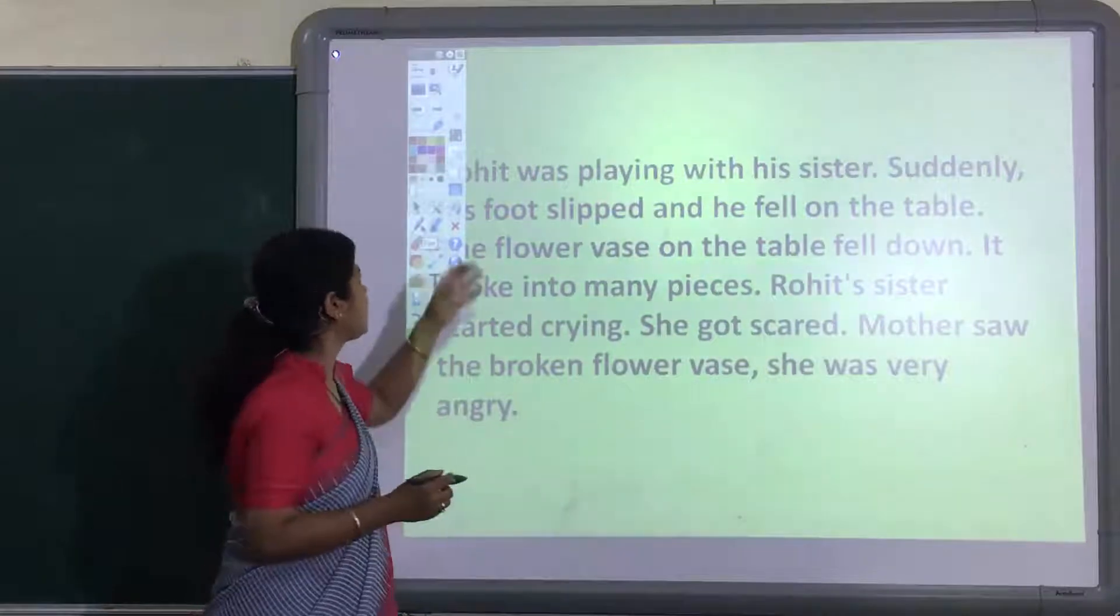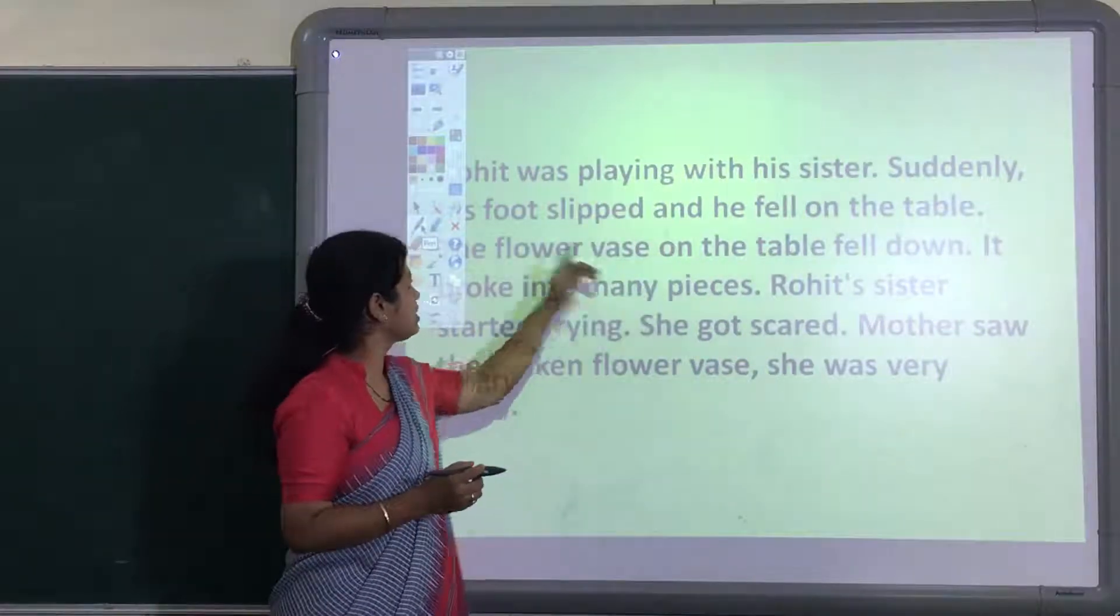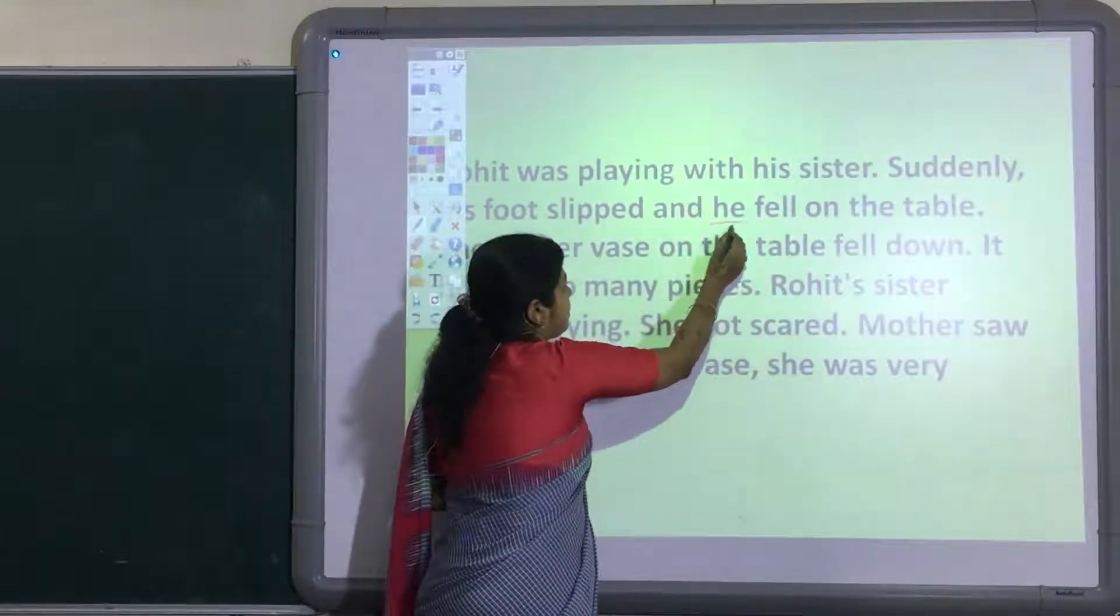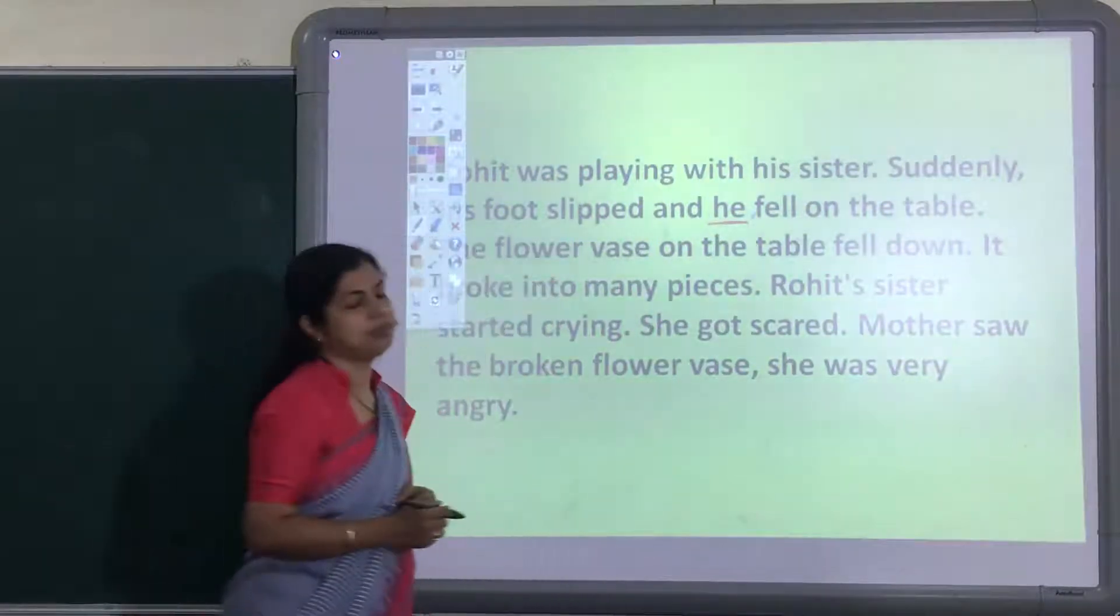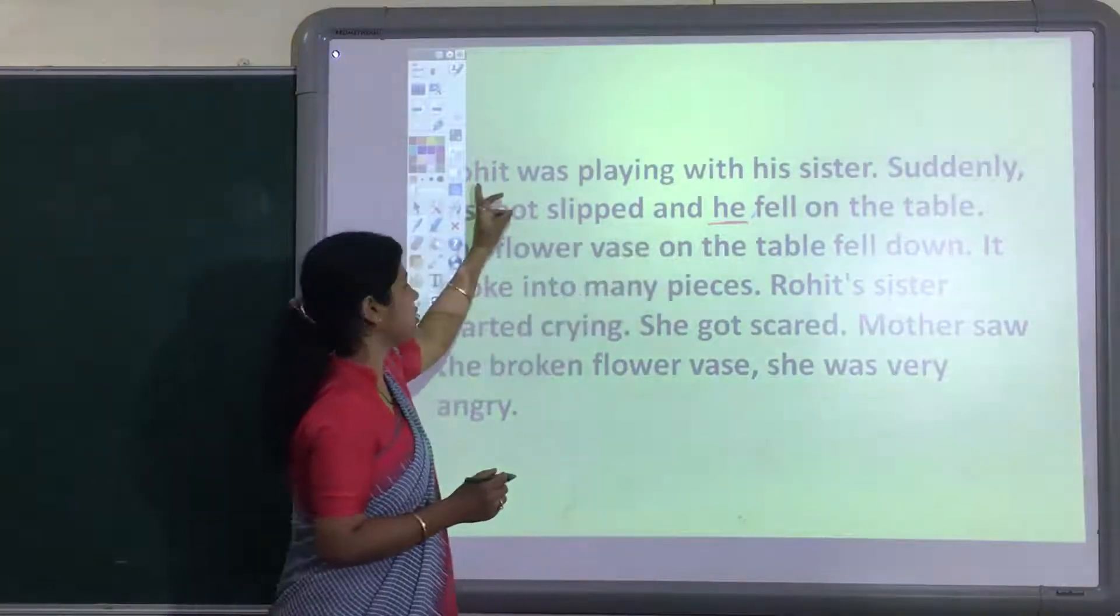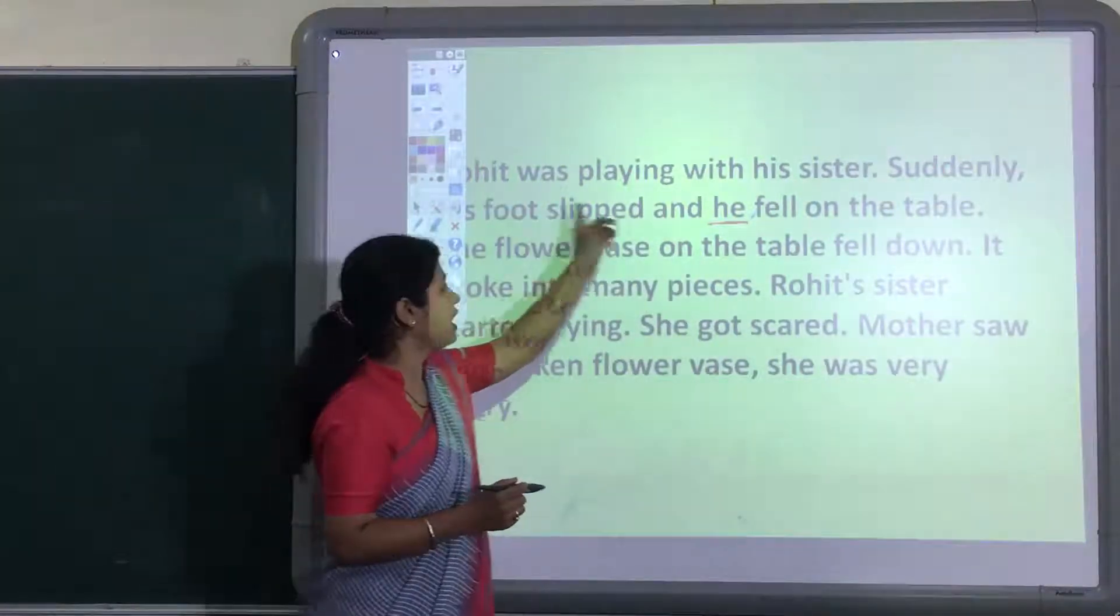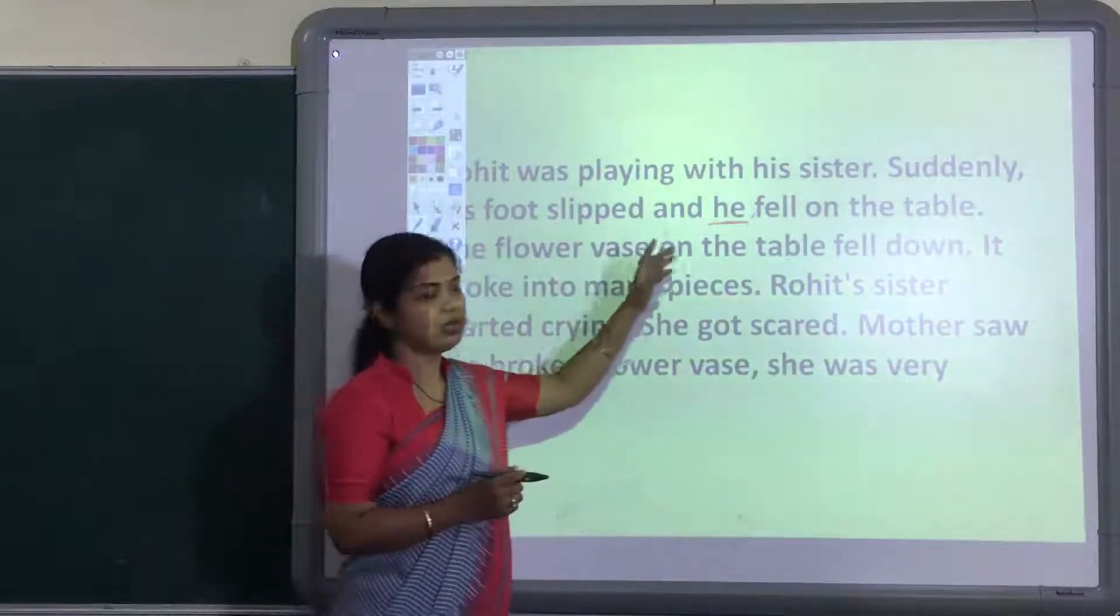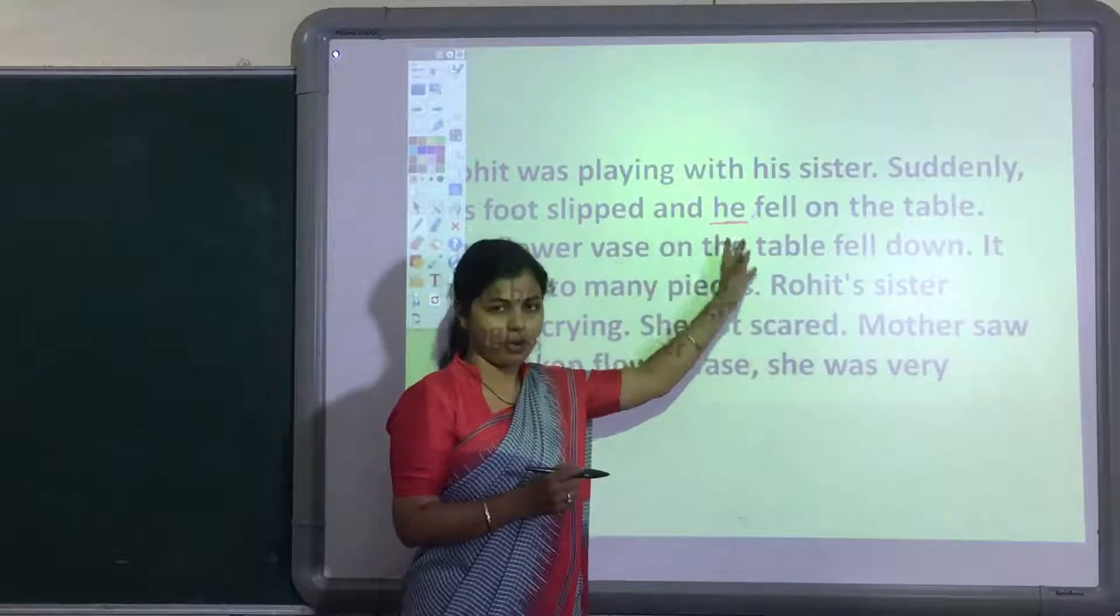And now, dear children. Here, Rohit was playing with his sister. Suddenly, his foot slipped and he fell on the table. So here in the second sentence, instead of using Rohit again, we have used he pronoun here. This means to avoid the repetition of noun, here we are using pronoun.